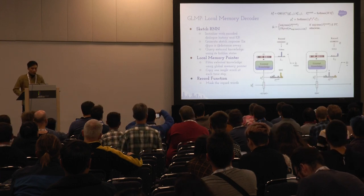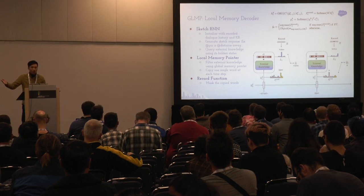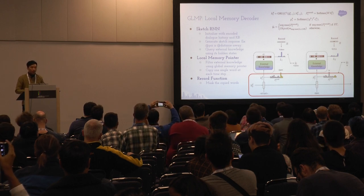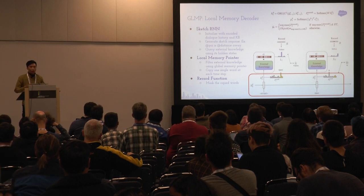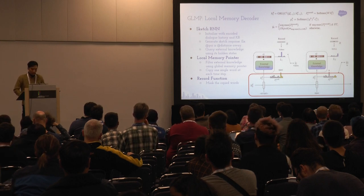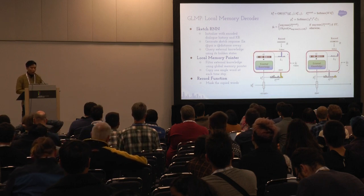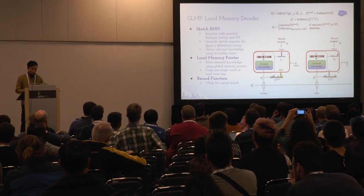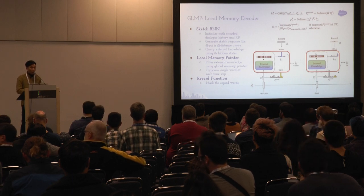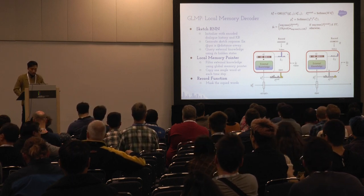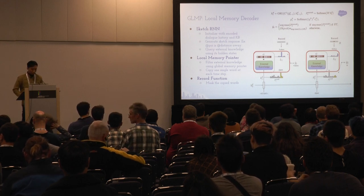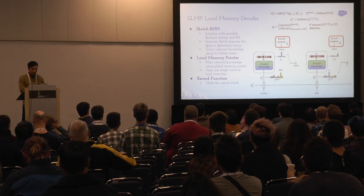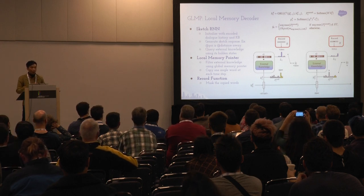Our local memory pointer, instead of directly generating the final response, first uses a sketch RNN to generate a sketch response — a response with unfilled slots, for example 'POI is distant away.' Then, based on its hidden states and the global memory pointer, we query the external knowledge again to get the local memory pointer L, which points to one entity word at each time step. We also have a record function to keep track of which nodes have already been copied, and if a node is copied, we remove it from the knowledge graph.